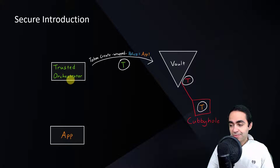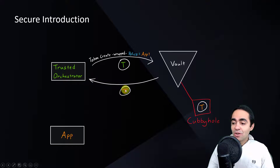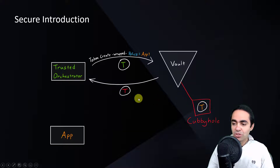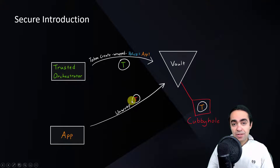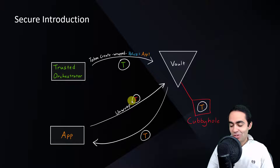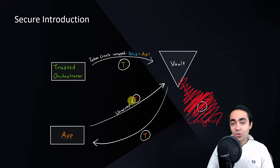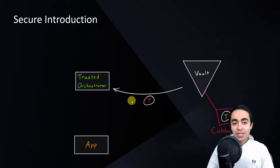Vault gives the trusted orchestrator this red wrapped token — it's not the actual original yellow token that was generated. We're giving a wrapped token, which gets delivered by the orchestrator to the application. The application in turn unwraps this red token and obtains the actual yellow token required to connect to Vault. At that point, because the token has been unwrapped, the cubbyhole disappears and the token is no longer stored there.